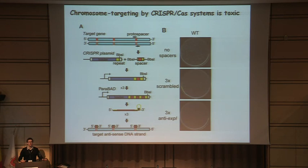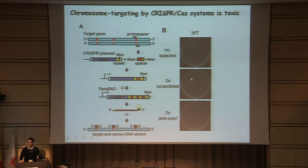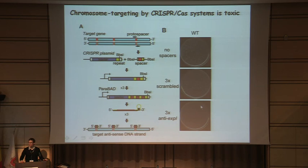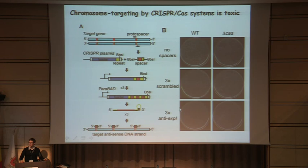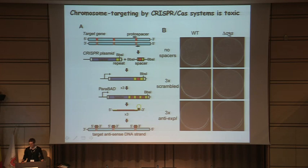When we introduced these plasmids into the host, plasmids with no spacers or scrambled sequences that wouldn't target the chromosome could be introduced with perfectly fine efficiency. However, if we had a plasmid containing spacers targeting a non-essential gene involved in quorum sensing, plasmid uptake was severely inhibited. To check whether this was CAS-dependent, we deleted the entire CAS operon, and we could see that deletion of the Cas genes enabled this plasmid to now be harbored within those cells — showing chromosomal targeting was CAS-dependent and toxic.